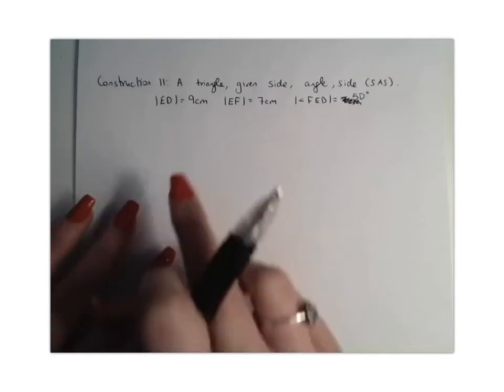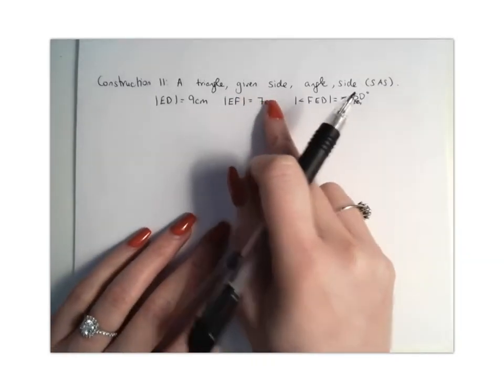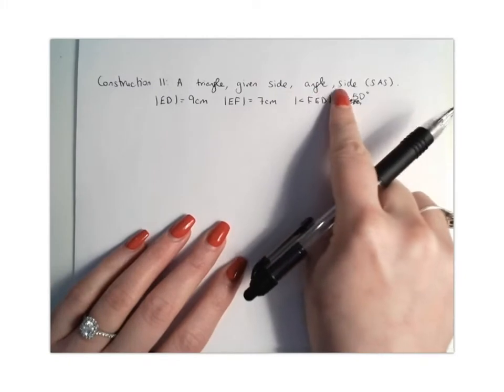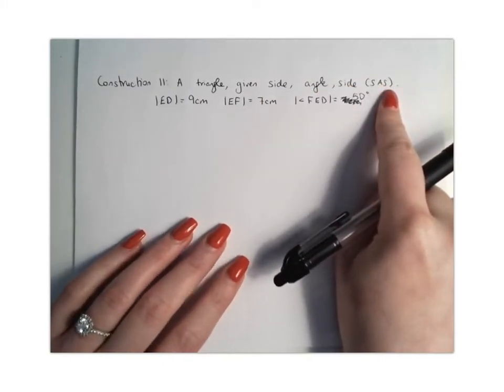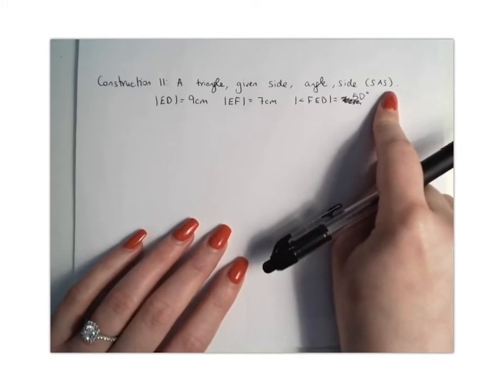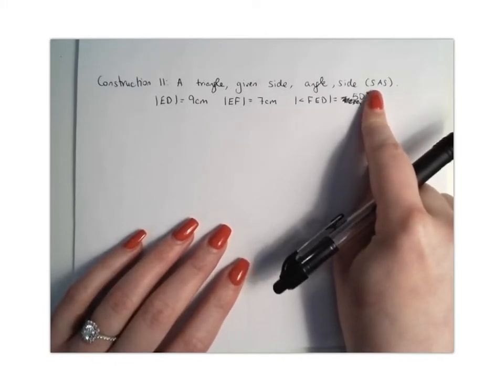For construction 11 we want to construct a triangle given side, angle, side. If we look to our congruency topic, we'll know when trying to prove congruency of two triangles we can use side, angle, side as one of those conditions.